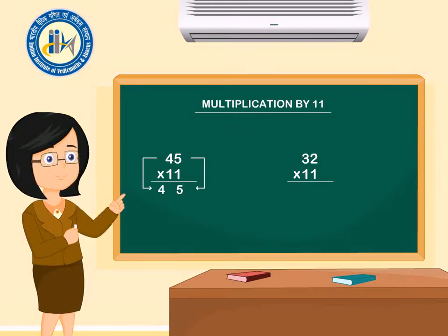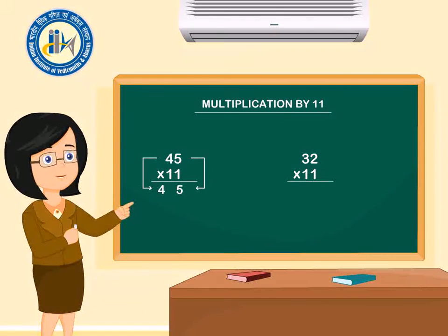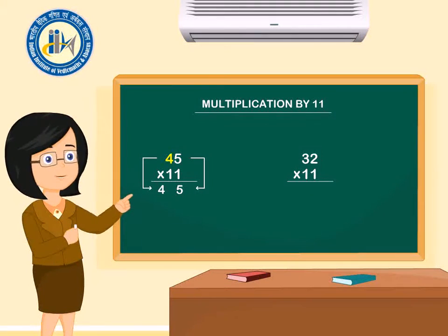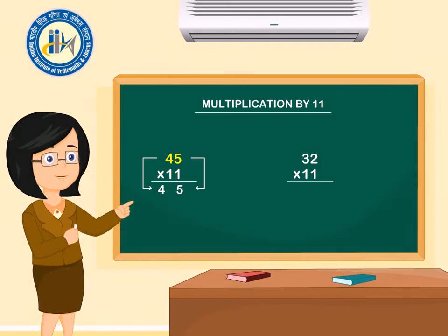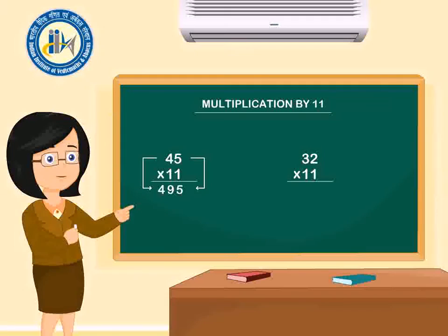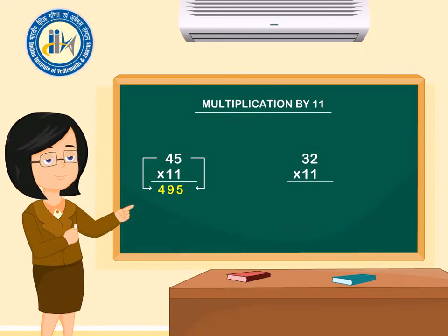And now we will add both of the digits, 4 and 5. 4 plus 5 is 9, so we will place 9 in between 4 and 5. Our answer is 495.